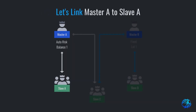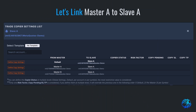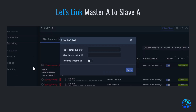We want master A to be linked to slave A using the risk factor auto-risk balance with a value of 1 to get the same risk. I will leave the default blank because filling this out will cause slave A to follow both master accounts. I won't fill out master B either because I only want slave A to copy master A. We will only define the setting on master A. Let's click define copy settings, add a risk factor, and hit save.